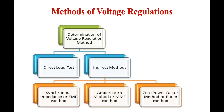The different classifications of voltage regulations: first is the direct loading test and second is the indirect loading test. The direct loading test is a conventional method — we directly connect a load to the alternator, then throw off the load and calculate load voltage and no-load voltage. This technique does not consider excitation and speed accurately, so it is only used for small alternators rated less than 5 kVA.